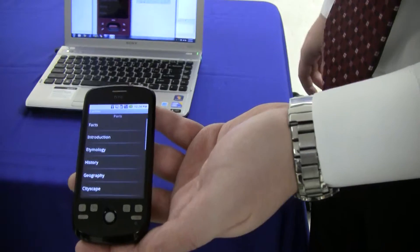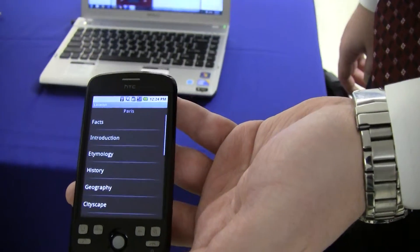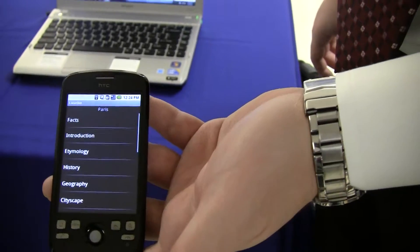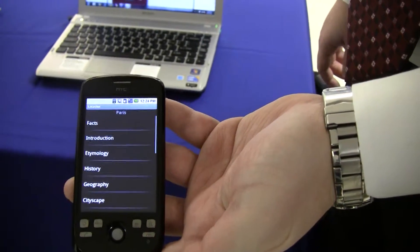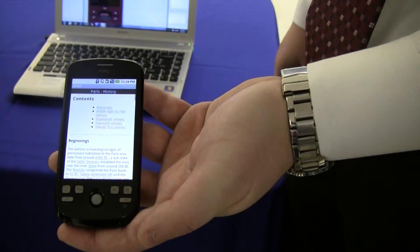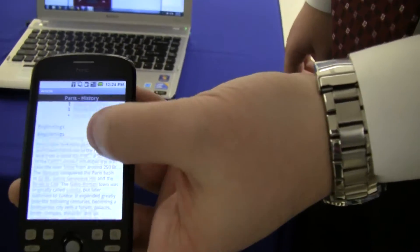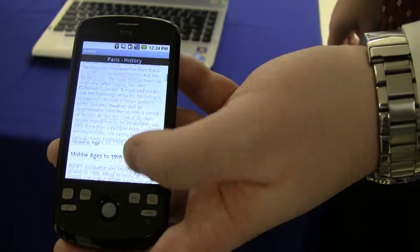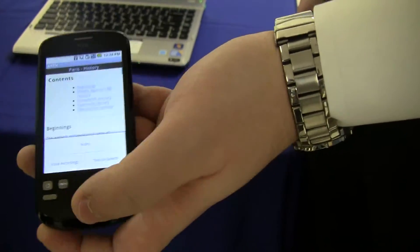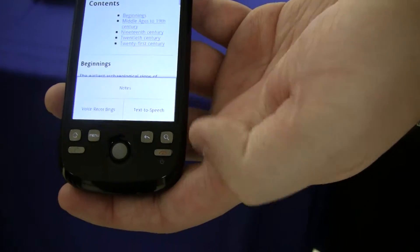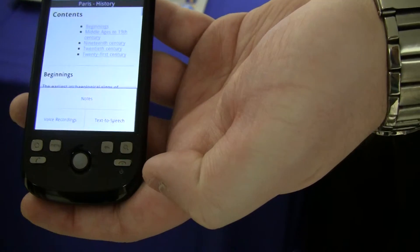And you'll see that we have the same view we had on the computer for West Virginia University article. So if we pick a section, we'll load up and we'll get an article view of the information of that specific section. We're able to scroll around and look at and read the article. By pressing the menu button on the phone, we get our menu which allows us to create notes, voice recordings, or use text to speech.